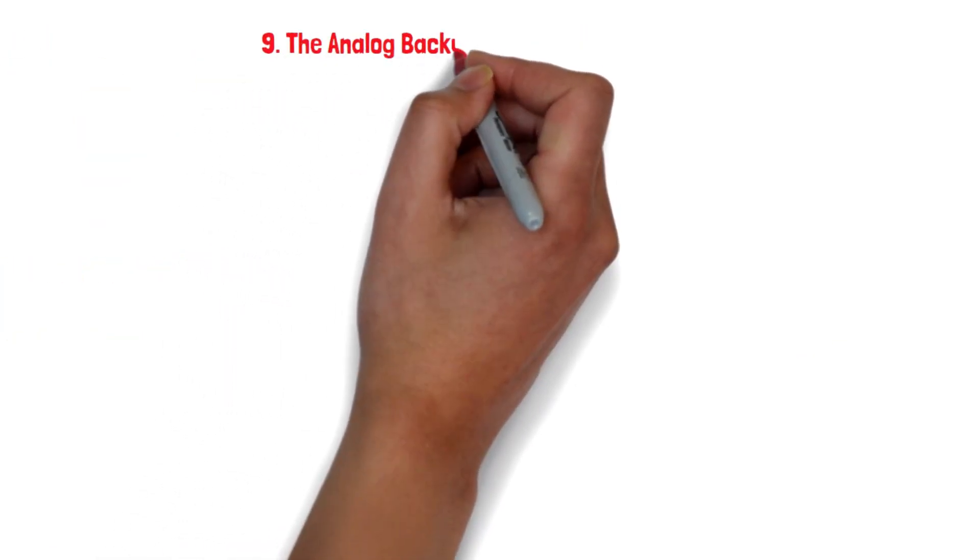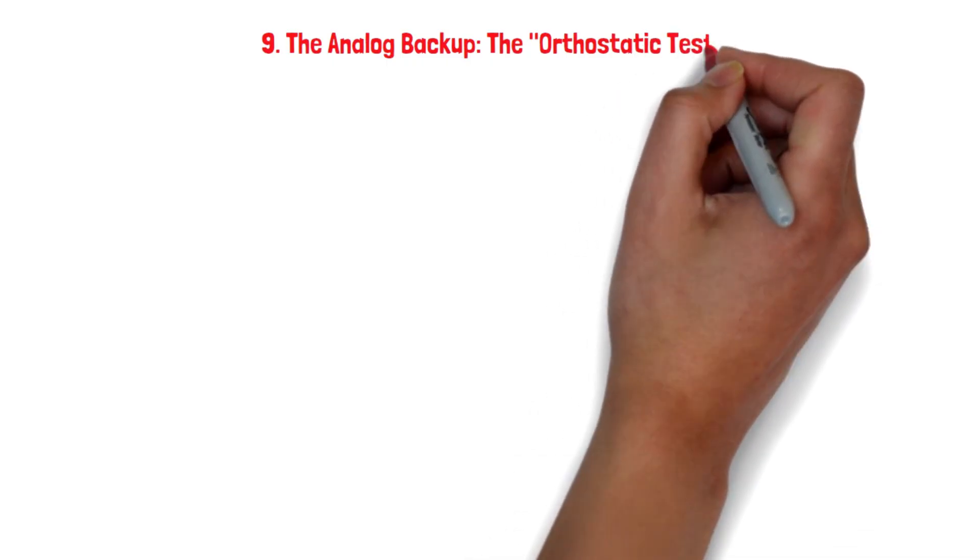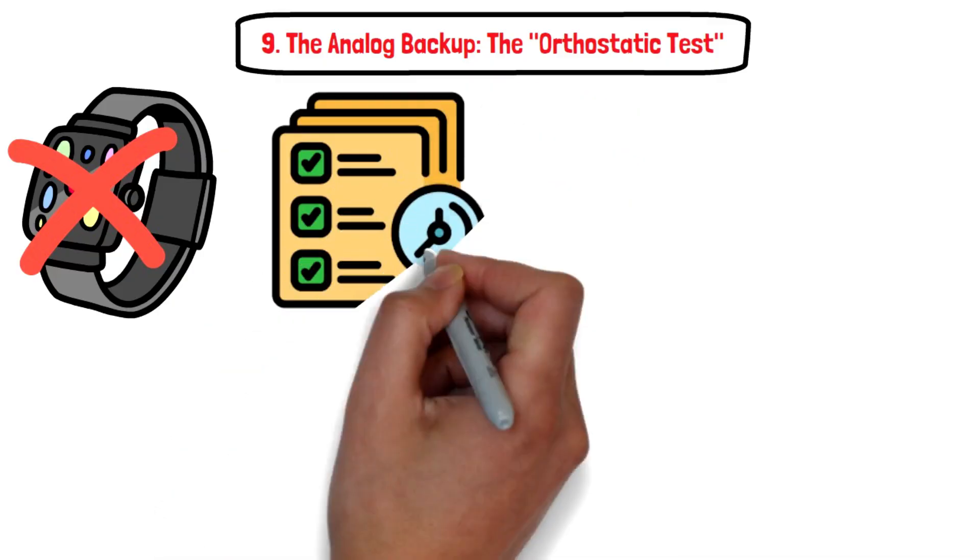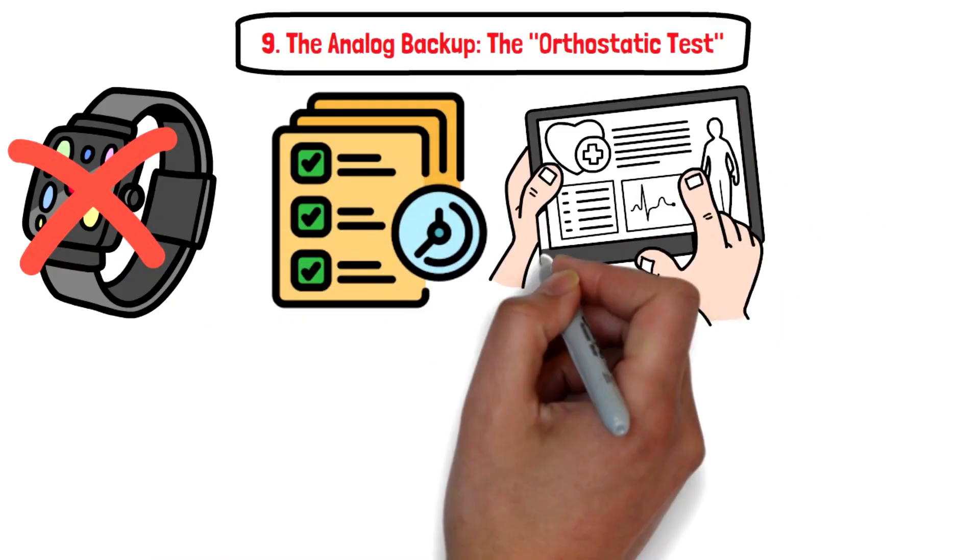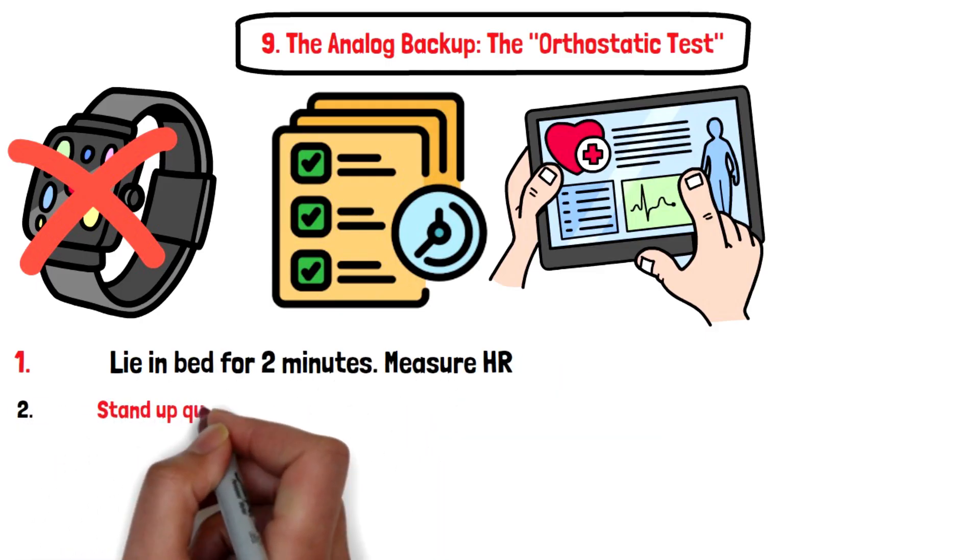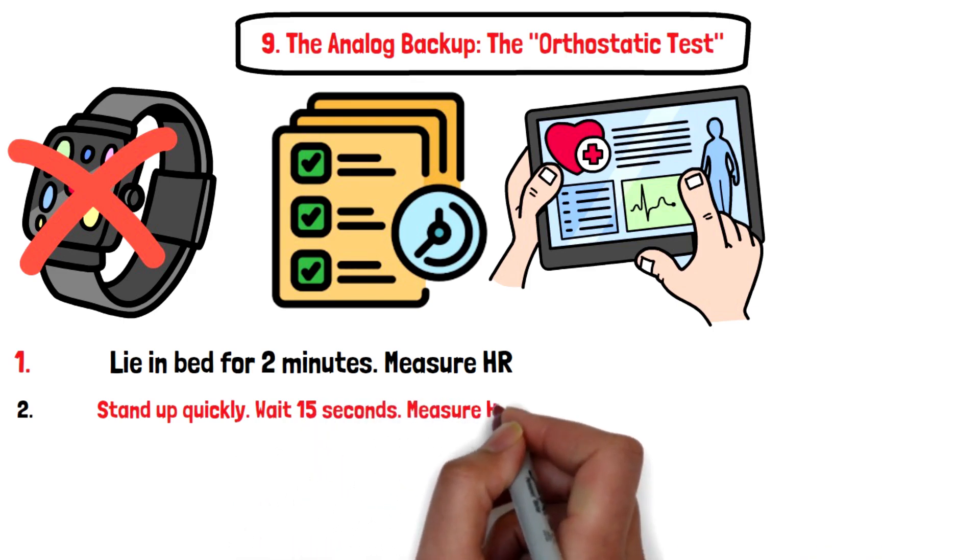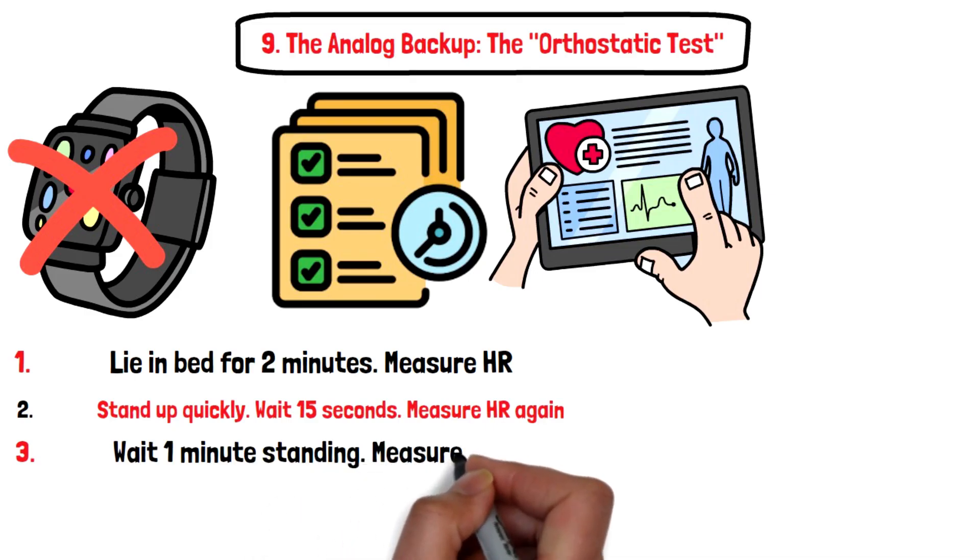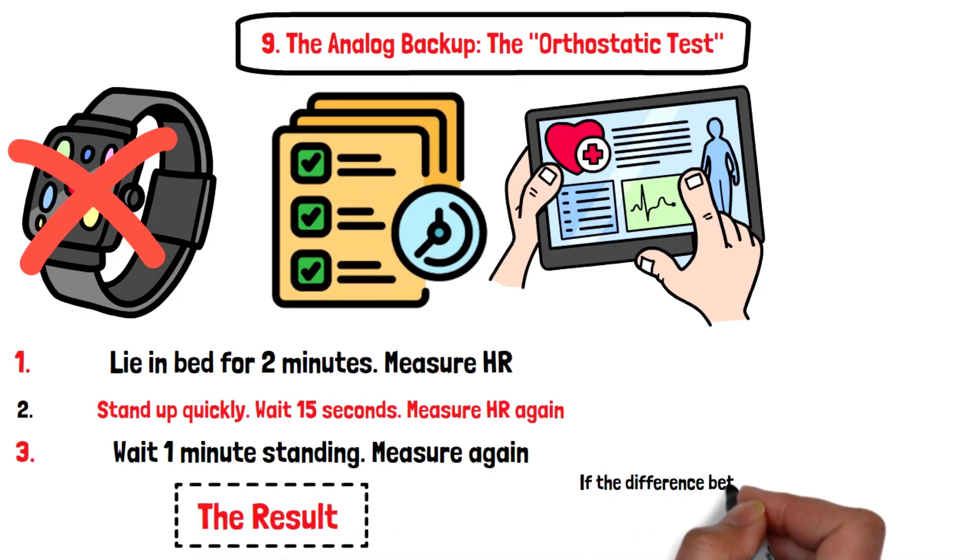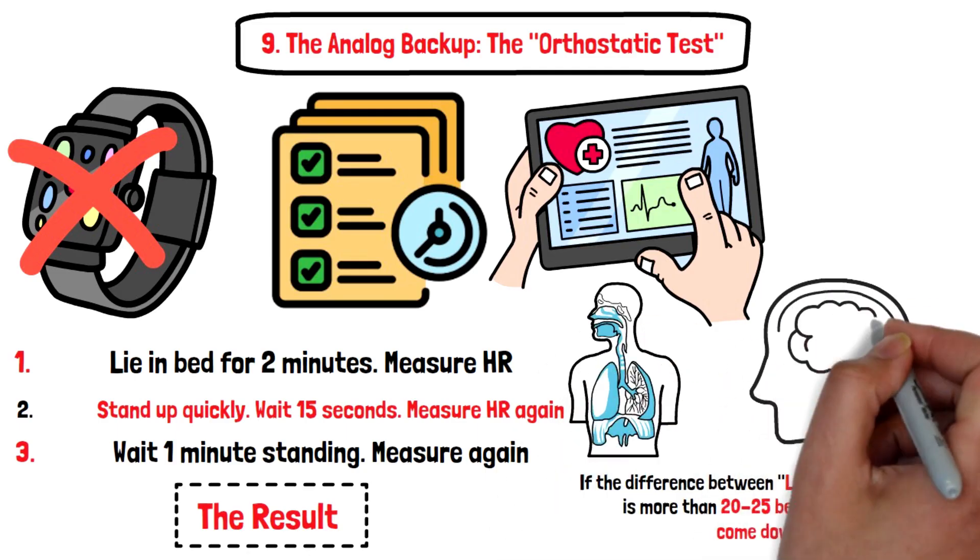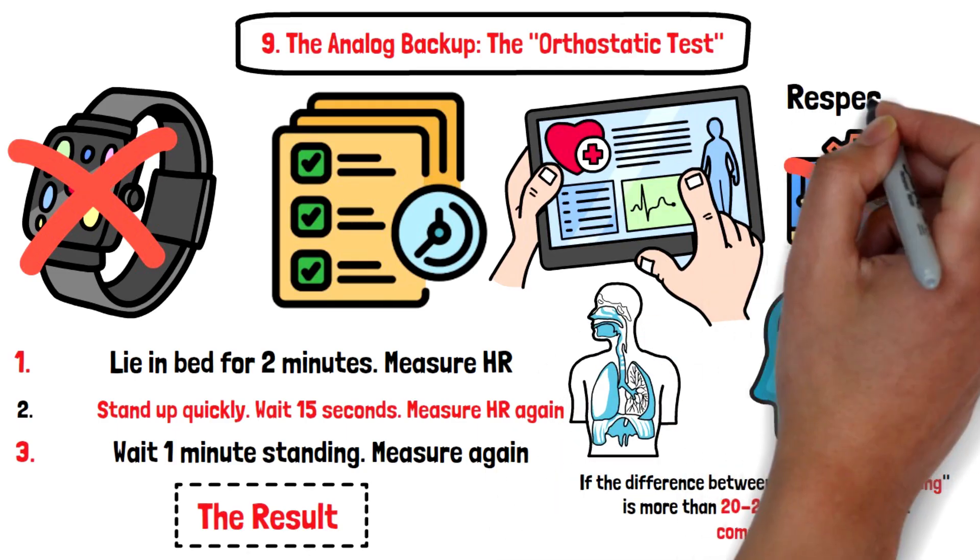Nine, the analog backup: the orthostatic test. If you really don't trust the watch, here's the ultimate analog test—the orthostatic heart rate test. Lie in bed for two minutes, measure heart rate. Stand up quickly, wait 15 seconds, measure heart rate again. Wait one minute standing, measure again. The result: if the difference between lying and standing is more than 20 to 25 beats and doesn't come down, your nervous system is fried. This is biology, not an algorithm. Respect it.